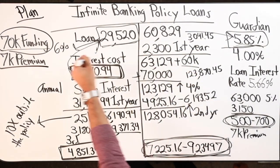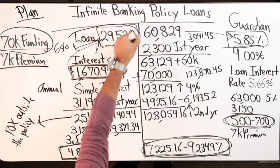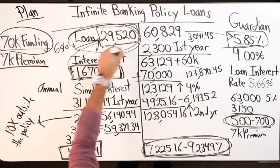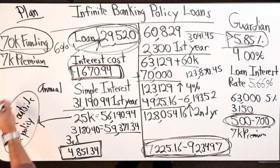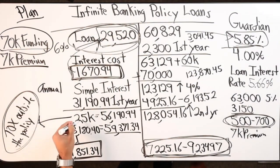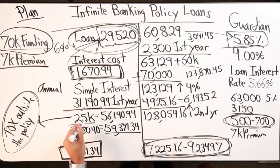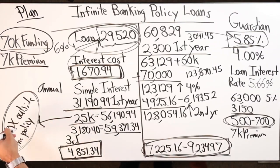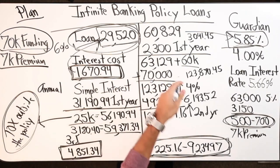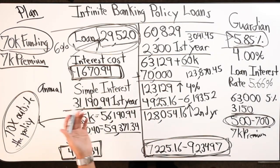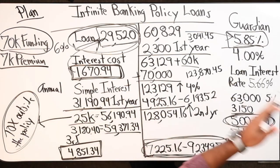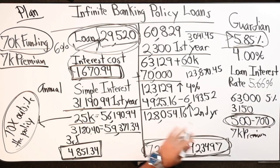What am I going to do with the money that I borrow out? I take that $25K or $30K and try to 10x it. If I 10x it, there's only so much I can pay back into the policy, and I just keep going year after year after year.